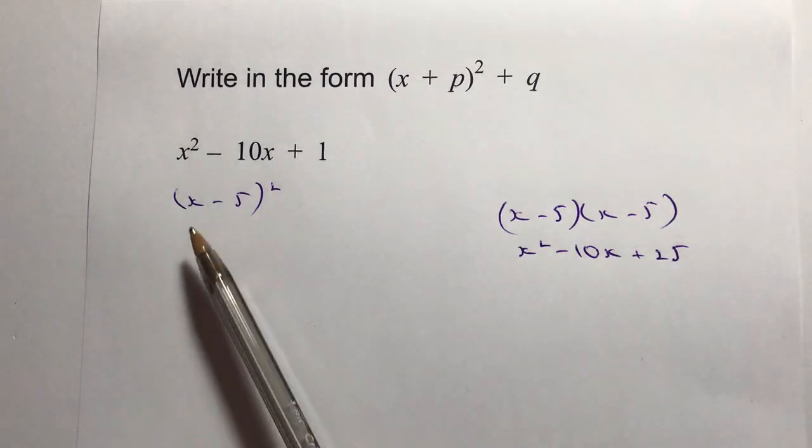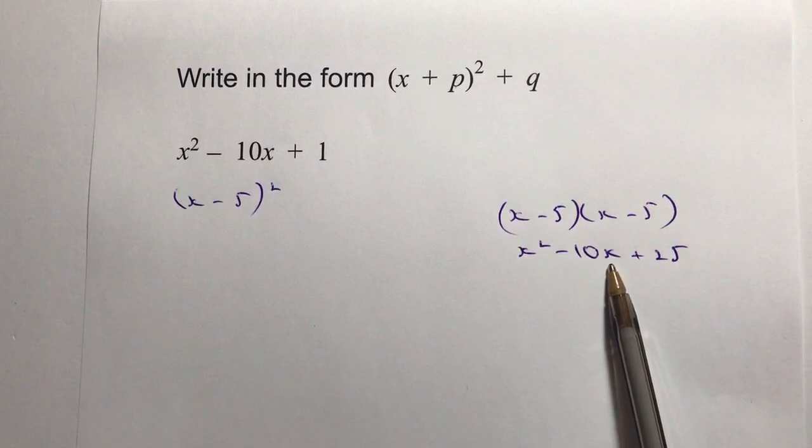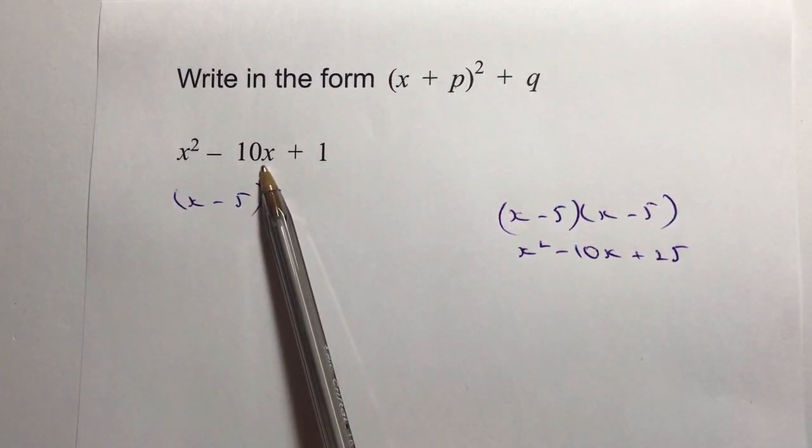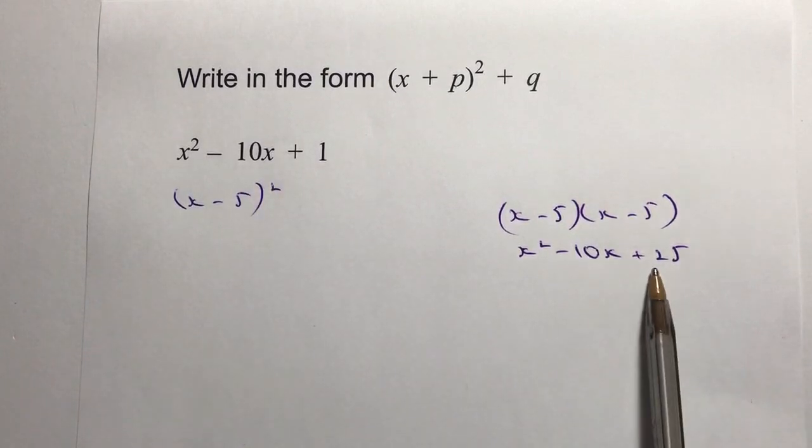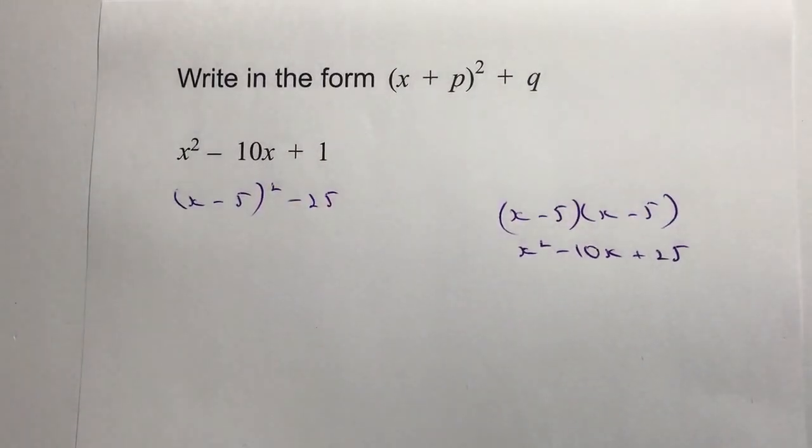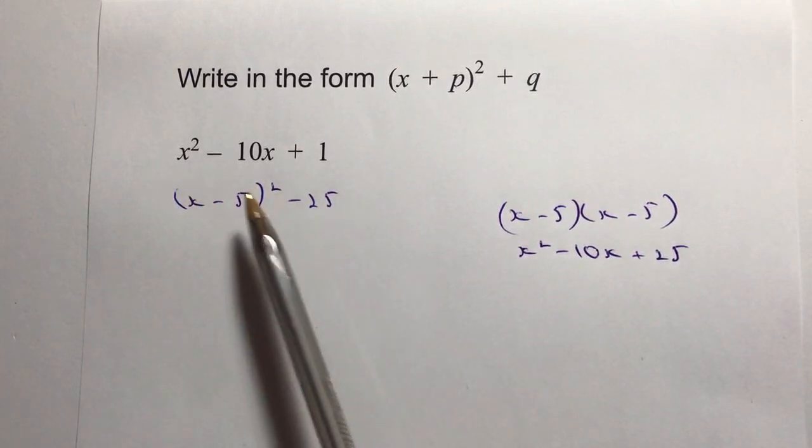So effectively, with my (x - 5)², I've got the first two terms exactly the same as that, which works out perfectly well. However, I've still got this +25 I've got to deal with, so what I'm going to do is minus 25.